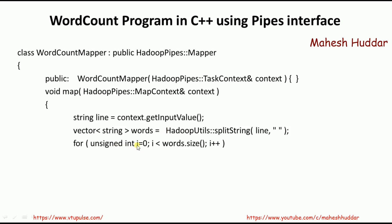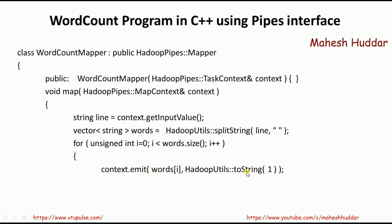Once the line is divided into words, each word is read from the words list and each word with value 1 is given as output — the word becomes the key and 1 is the value. We use a for loop: i equals 0, i less than words.size(), i++ — and then we emit the output using context.emit, passing words[i] as the key and "1" as the value string. So the first iteration emits foo 1, second foo 1, third linux 1, fourth bar 1, and so on.